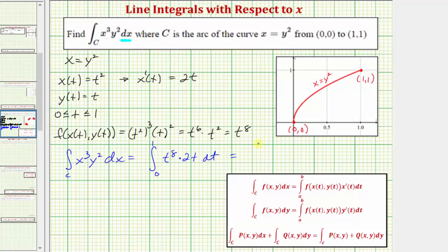So simplifying, we have the integral from 0 to 1 of 2t to the ninth dt. Let's go ahead and evaluate this on the next slide.